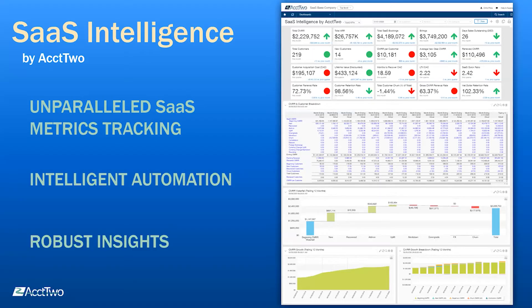Today we're going to take a look at SaaS Intelligence by ACT2. This is a KPI metrics tracking and reporting engine built on the Intact platform. It enables very deep and granular visibility into the activity going on within your Intact environment. We automatically diagnose transactions as they flow through the system and bucketize them appropriately into the CMRR buckets and categories as you would expect.